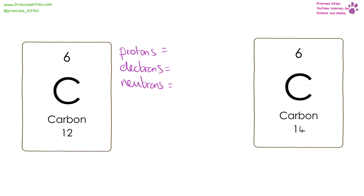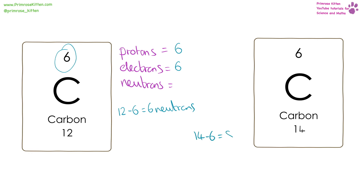Here we have two different isotopes of carbon: carbon-12 and carbon-14. Working out the number of protons is exactly the same — it's the atomic number, so for both that is six. The number of electrons in an atom is the same as the number of protons, so that is also six. But the neutrons are different: for carbon-12 it is 12 − 6 = 6 neutrons, and for carbon-14 it is 14 − 6 = 8 neutrons.